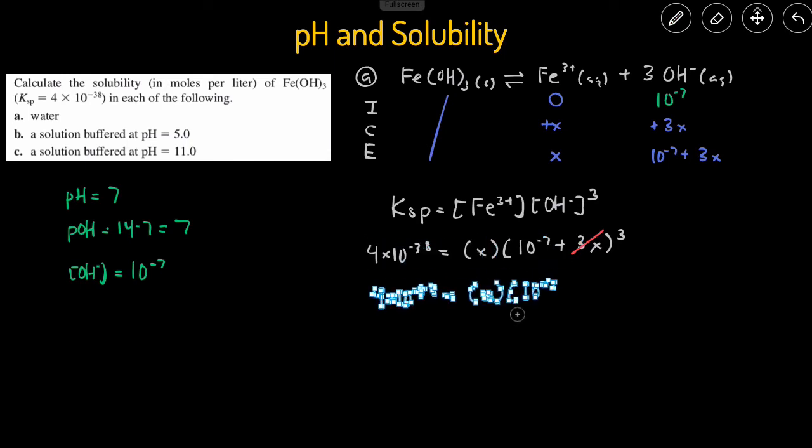So let's just rewrite that, and then to solve for x, we can just divide both sides by 10 to the negative 7 cubed. So this would be 4 times 10 to the negative 38 divided by 10 to the negative 7 and then we're going to cube that. Now you get x equals 4.0 times 10 to the negative 20 and that's going to be in molarity and that's the molar solubility. When you're setting up an ICE table, x is always going to equal to molar solubility. So that's the answer for A.